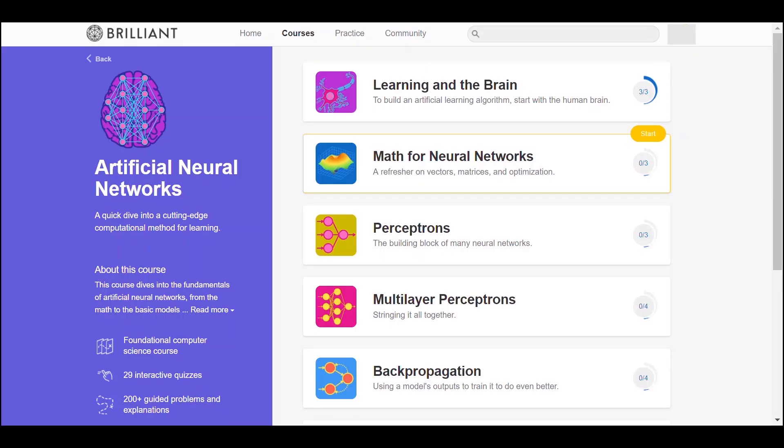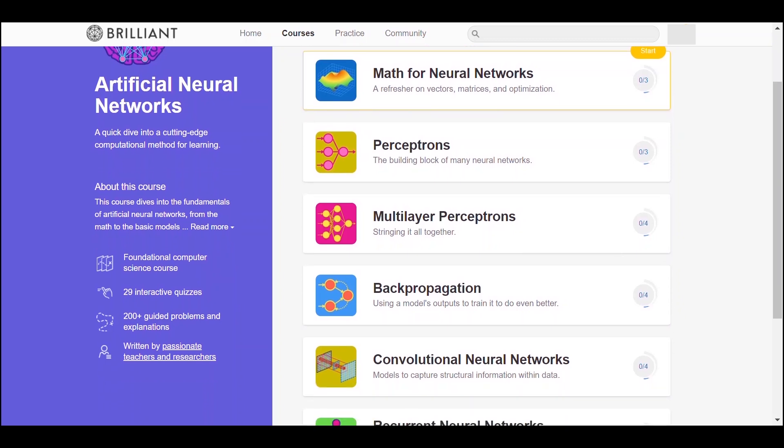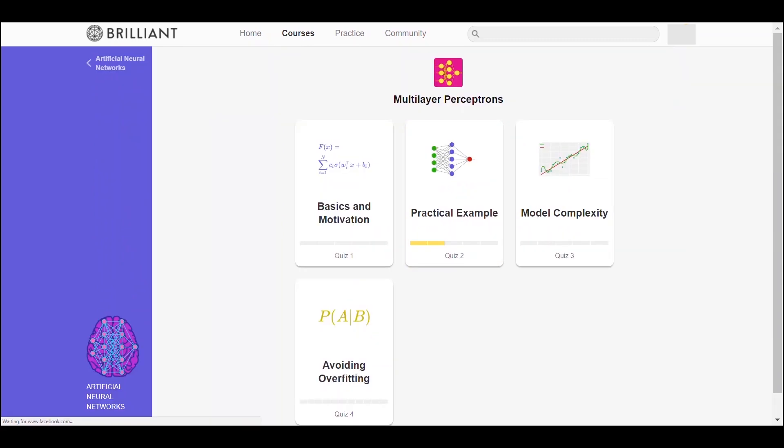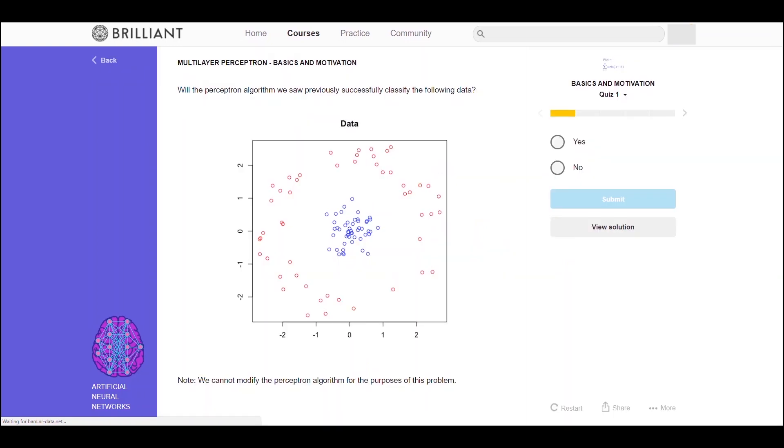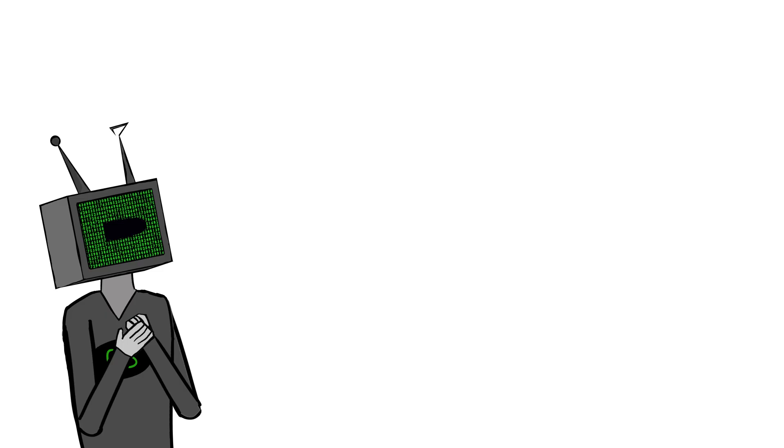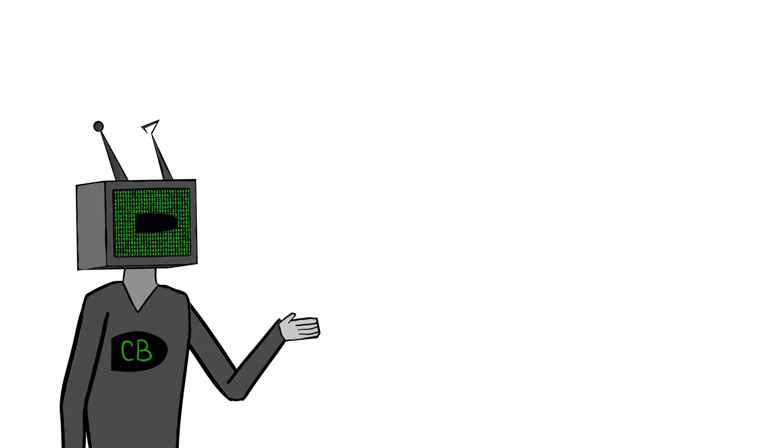Once again, Brilliant.org comes in to save the day. They have an entire course on neural networks with interactive lessons on everything from the brain to very complicated neural networks, such as convolutional neural networks, which are just insane. They break down each topic into small chunks, which makes very difficult topics such as neural networks super easy. The first 200 people to use this link will get 20% off an annual subscription. So if you want to deepen your understanding of the topic of neural networks and support this channel at the same time, then checking them out would be a great idea.